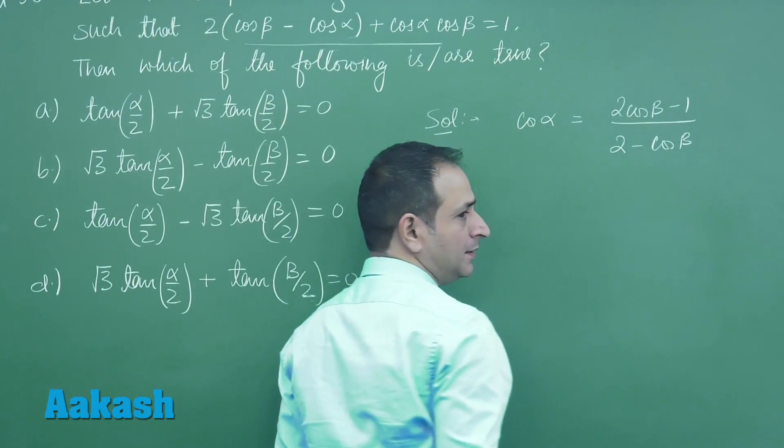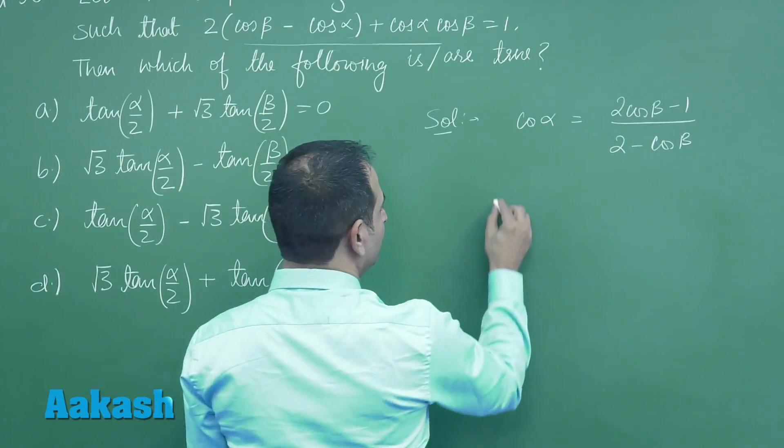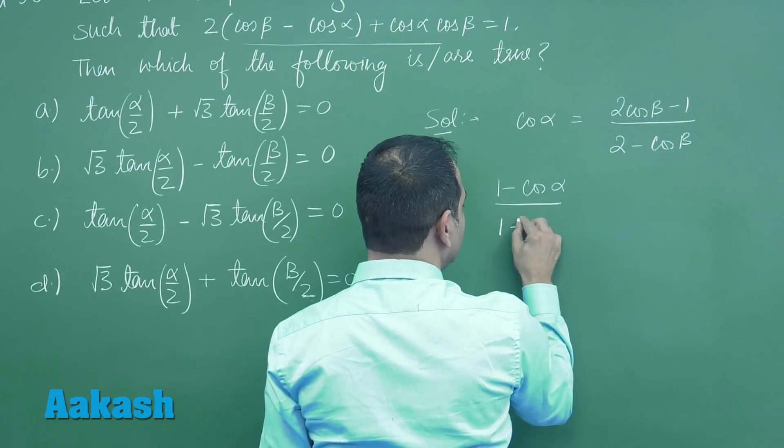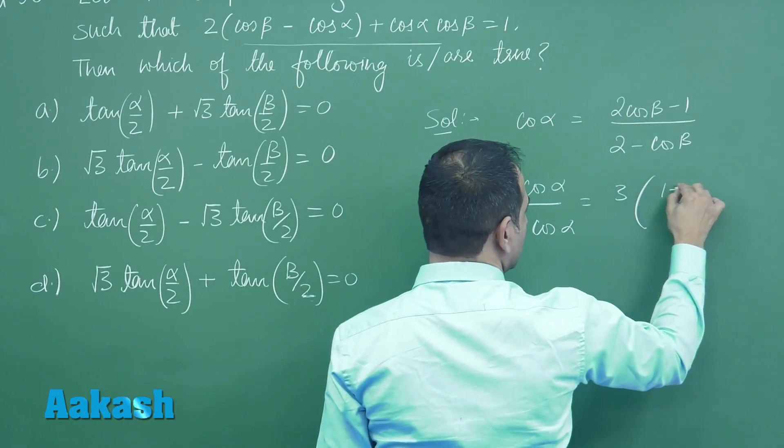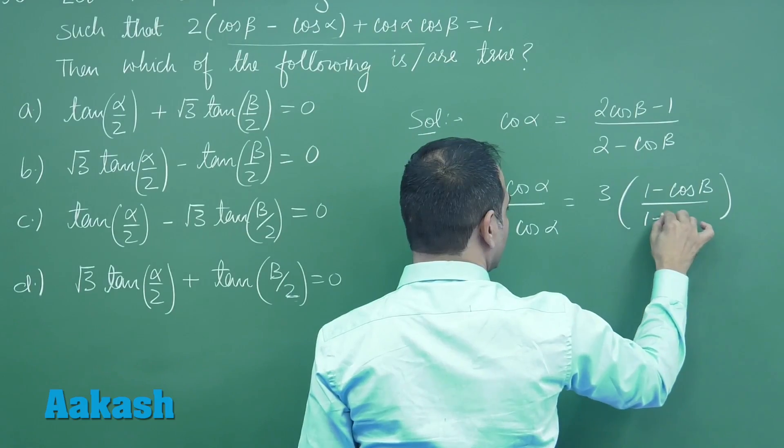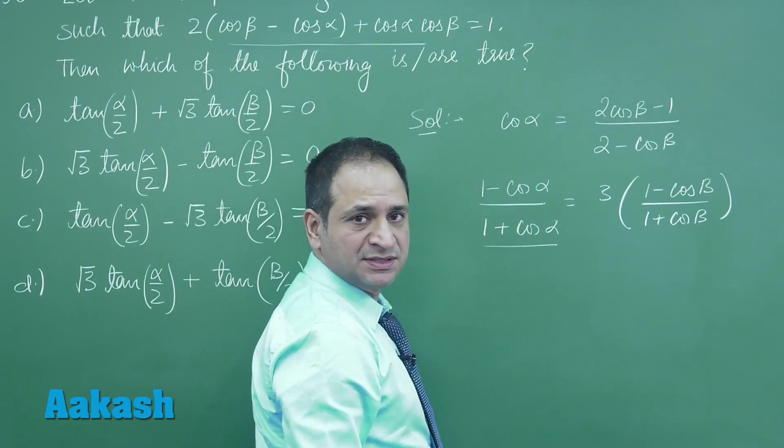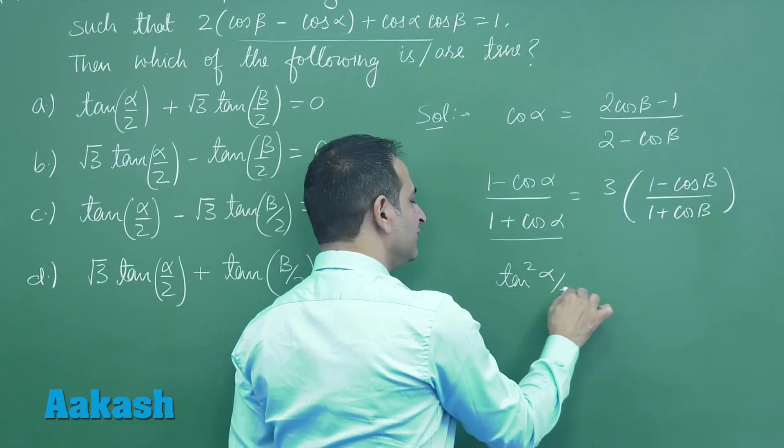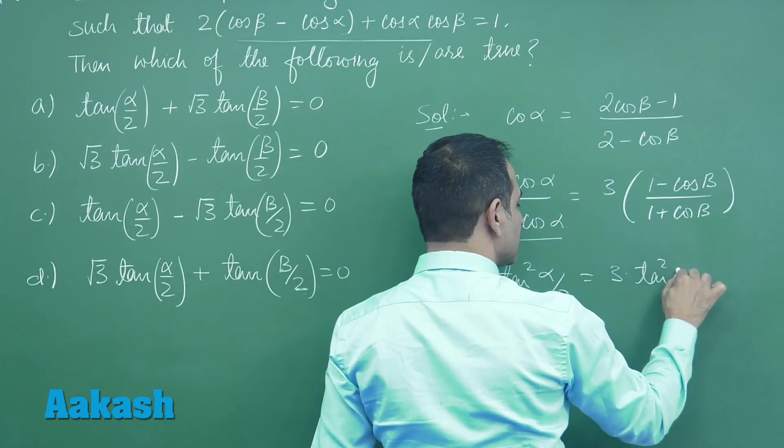Now applying componendo and dividendo here, we have 1 minus cos alpha upon 1 plus cos alpha, which is equal to 3 times 1 minus cos beta upon 1 plus cos beta. Clearly you can see this is equal to tan squared alpha by 2, and this is tan squared beta by 2.